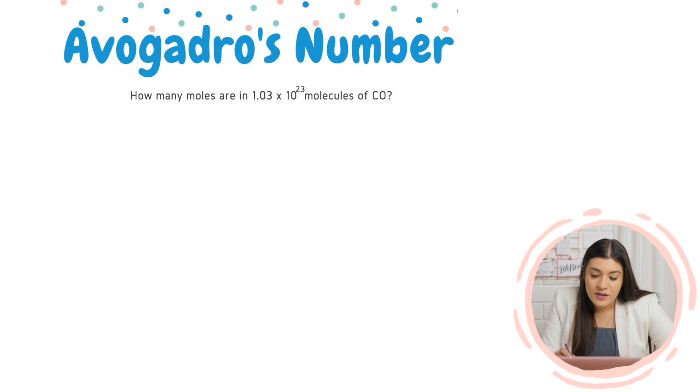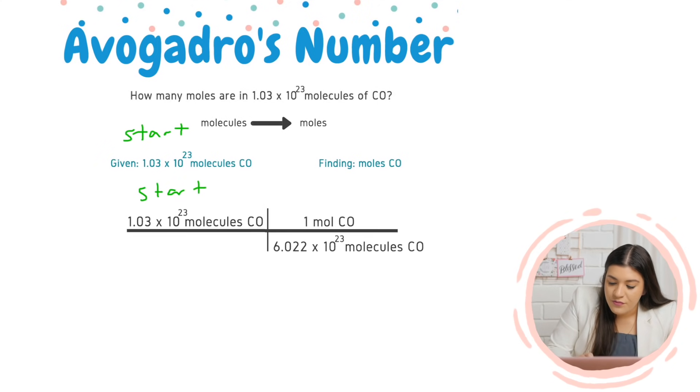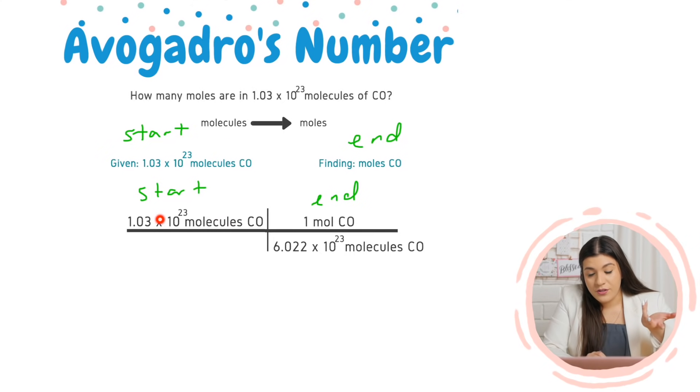Same thing. I want you to just write, what are you given? What are you finding? Set it up. And then we'll go over it again. Stoichiometry is just a way to cancel out units to get to the unit that you want. But that's all stoichiometry is.